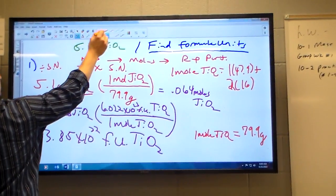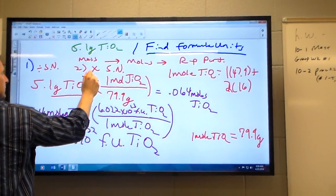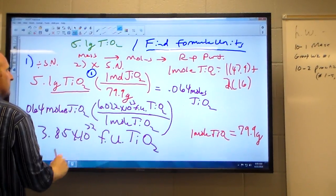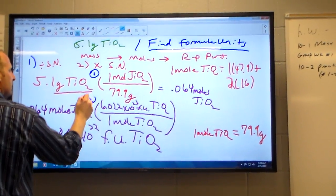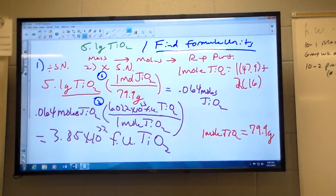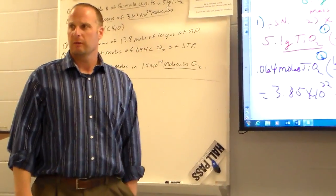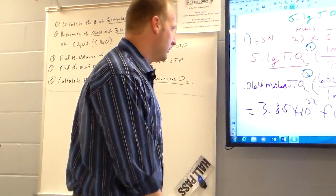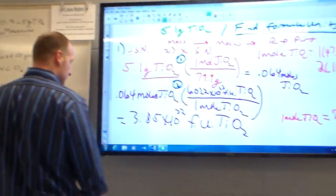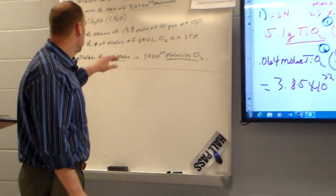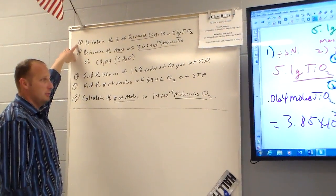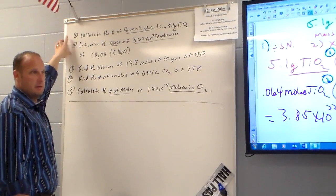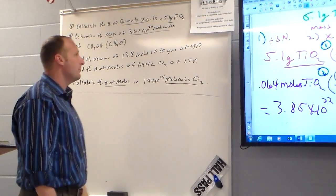This was the first step here that we're talking about, right here, divide by the special number, and this was the second step, multiply by the special number. How do I know what the special number is? It's going to be the quantity I'm talking about. I'm talking about mass, the special number is what I find on the periodic table. I'm talking about representative particles, the special number is 6.22 times 10 to 23rd. So, that's how you do one and two. Now, let's talk about number three.